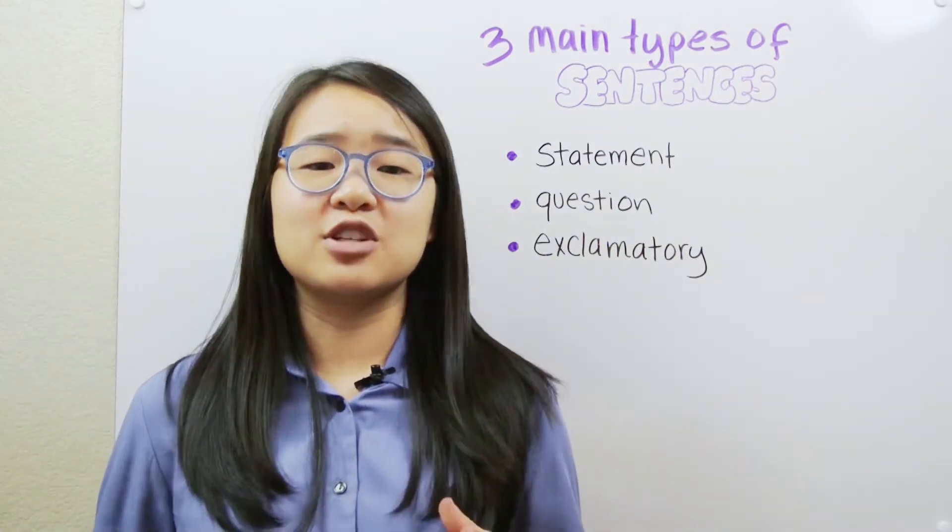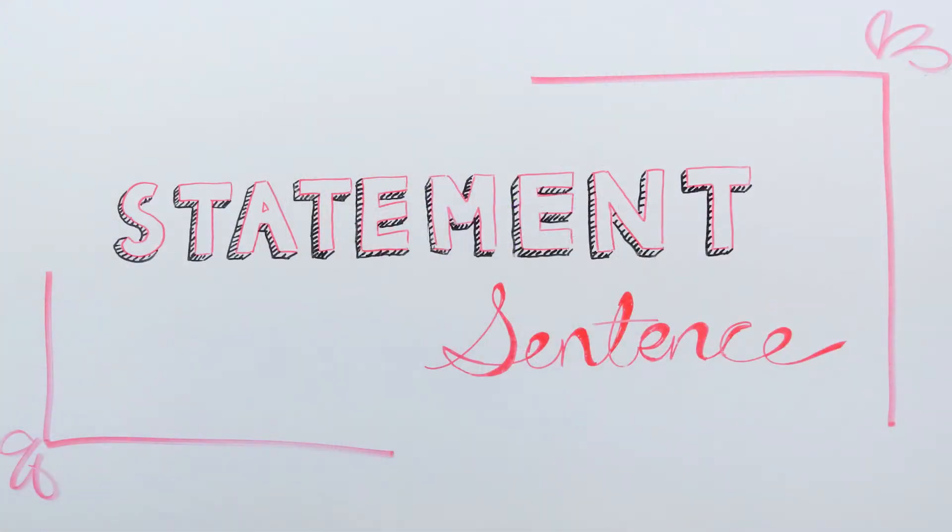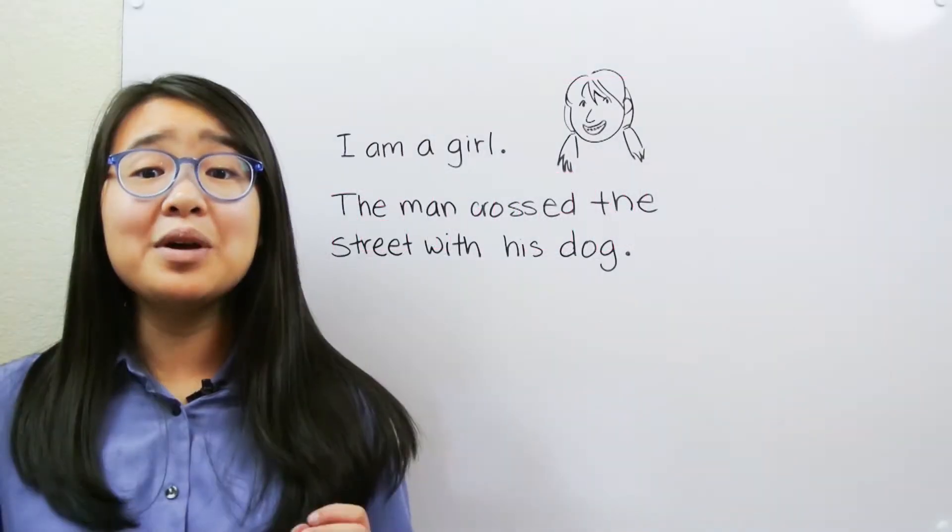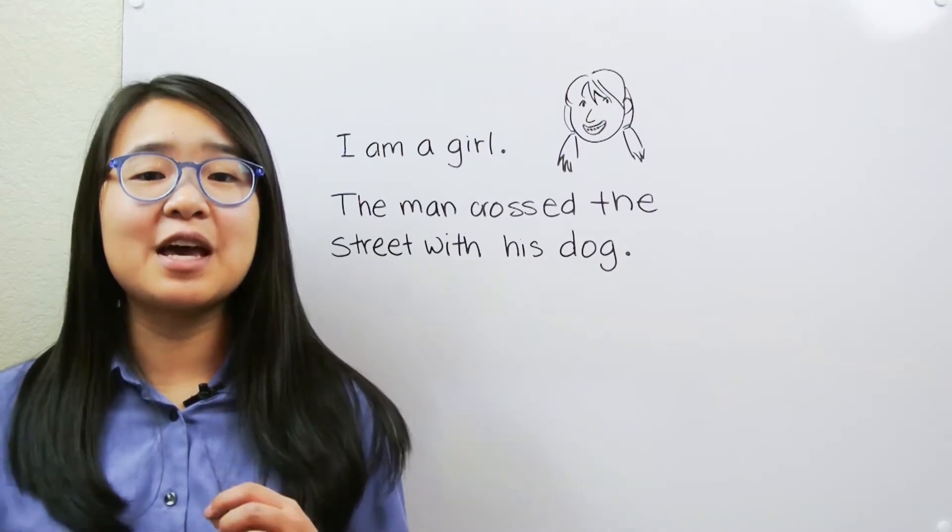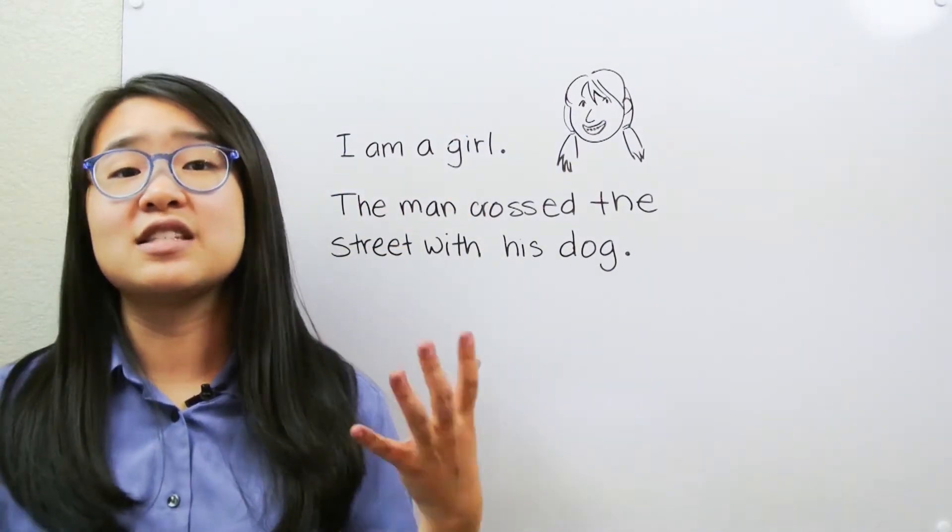We'll start with a statement sentence, which is a very common type of sentence. We make statements all the time. For example, I am a girl. This is a sentence which makes a statement about me.